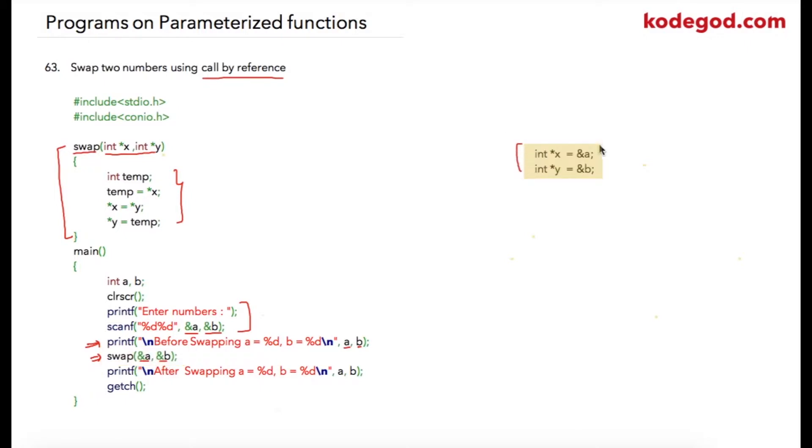This is something that is happening: int star x is equal to address of a, so this is nothing but integer pointer x is going to point at address location of a. So when we use star x, we can replace it with star address of a.